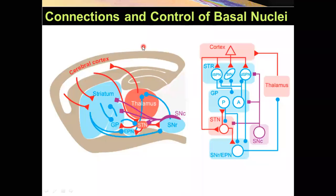In this video, we're going to talk about connections and control of basal nuclei. If you look at the drawings, you will see that the basal ganglia are strongly interconnected with cerebral cortex, thalamus, and the brain stem.